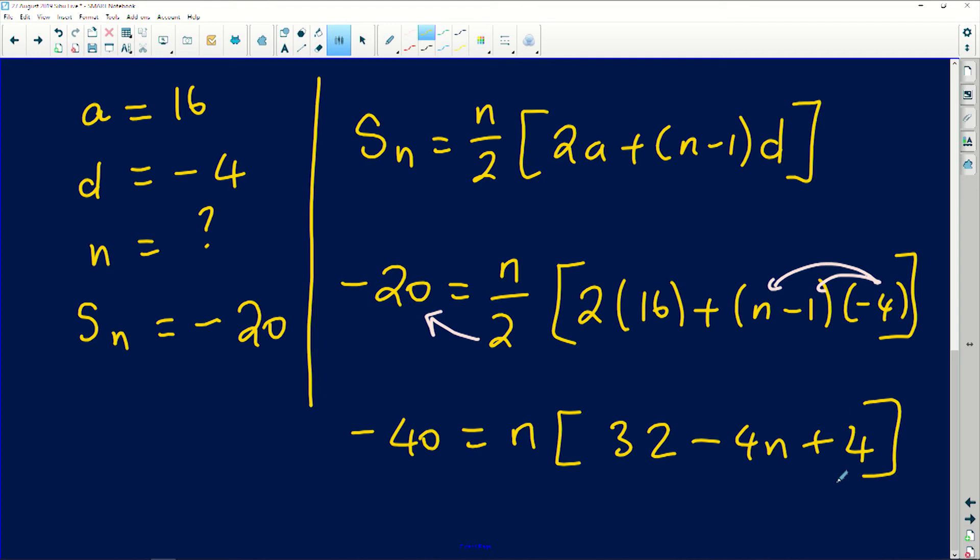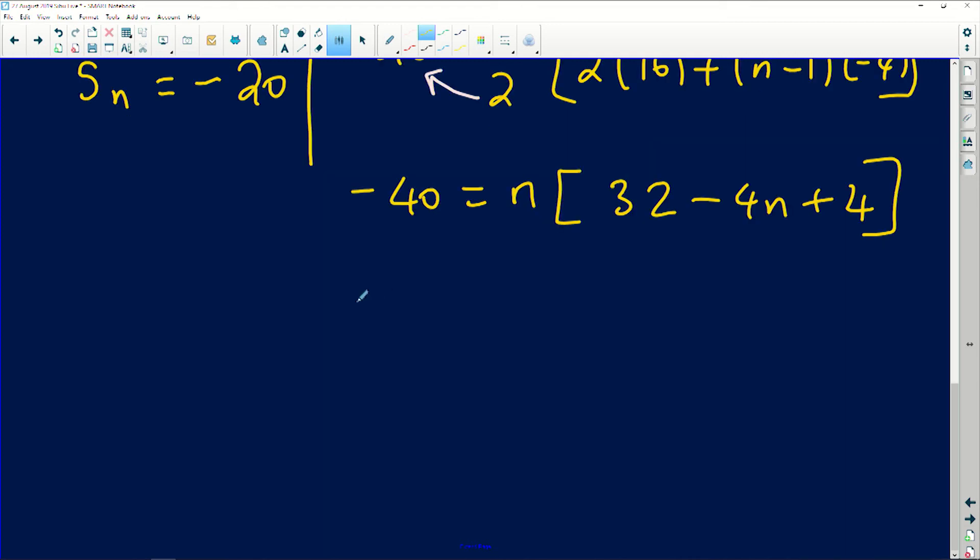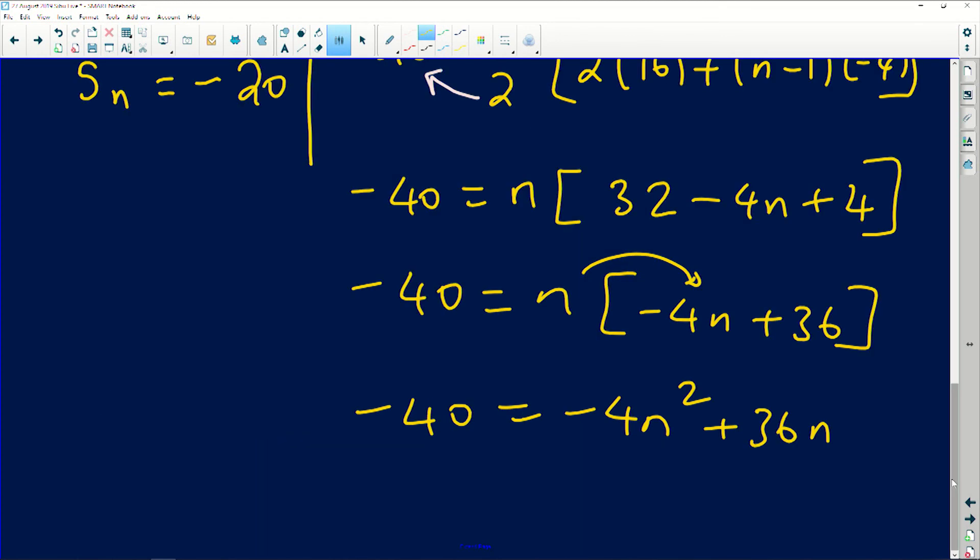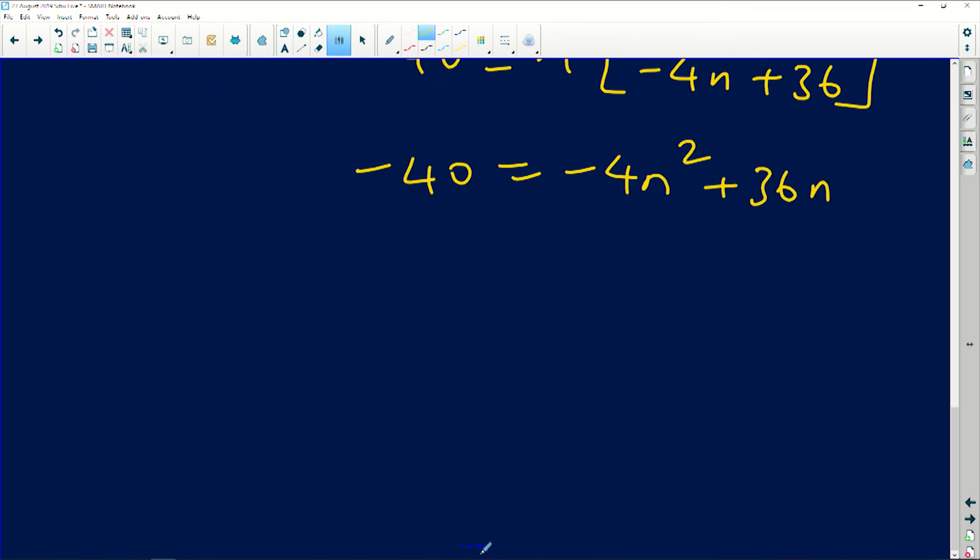So if I continue, you'll simply have negative 40 equals n times negative 4n plus 36. Negative 40 will be negative 4n squared plus 36n. And if you take all the terms on the right hand side to the left, which will leave you with a basic quadratic equation, you'll have 4n squared minus 36n minus 40 equals 0.